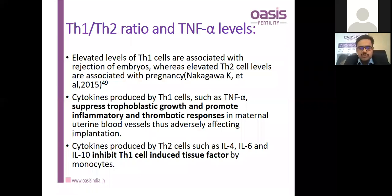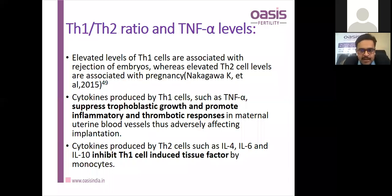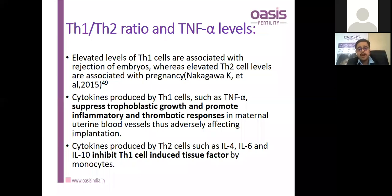Regarding TH1 to TH2 ratio, TH1 levels hamper the TH1 to TH2 ratio. TH2 is a pro-pregnancy state where high levels are associated with pregnancy. Cytokines produced by TH1 such as TNF-alpha oppose cytokines produced by TH2 cells — interleukin-4, interleukin-6, and interleukin-10. A raised TNF-alpha to interleukin-10 ratio can be a marker for recurrent implantation failure.